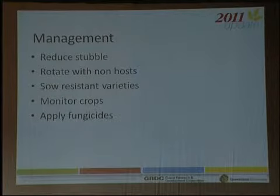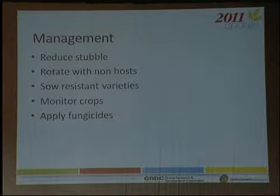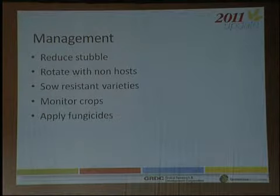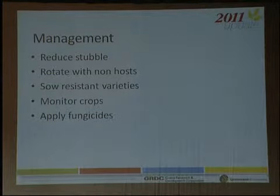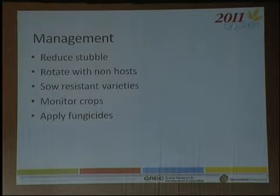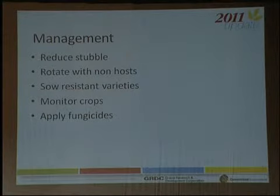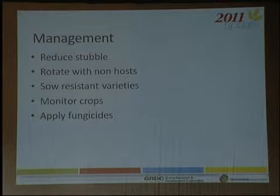How do we manage them? Reduce your stubble load — there are several options and I'll show you a slide on why that should be done. Rotate with non-host crops: legumes, canola, oats, barley all give options to get away from yellow spot. Sow resistant varieties — I've got a slide that demonstrates how effective that can be. It's very important that agronomists and the farmers they serve learn to monitor crops adequately. That's not driving down the headland in the ute saying it's nice and green. You've got to get out, look in the crop, look down into the canopy — that's where the action starts. And of course we have some very good fungicides at our disposal.